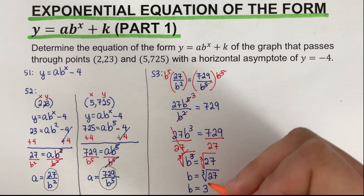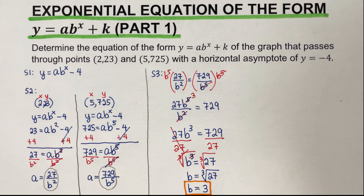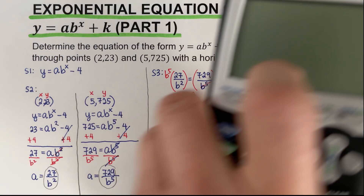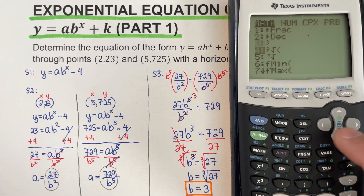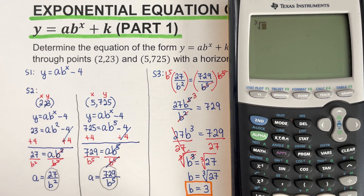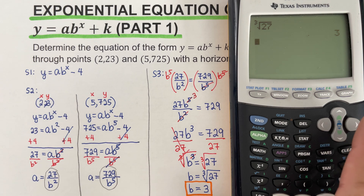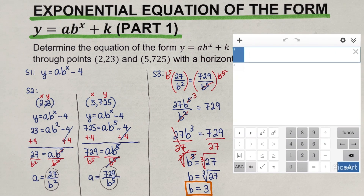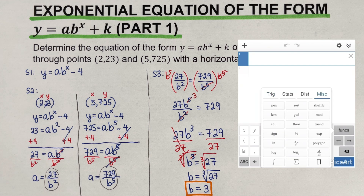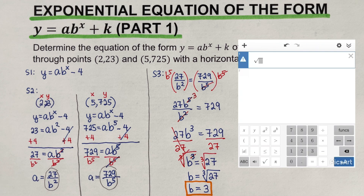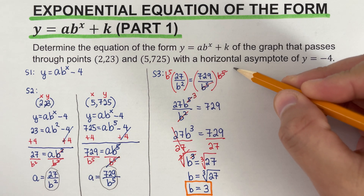For the TI-84 yellow calculator, go to Math, scroll down to option 4 for cube root, enter 27, and you get 3. On the decimal calculator, hit Function, go to Miscellaneous, select nth root, type 27, and that gives 3. Any of these options can be used to determine the cube root.